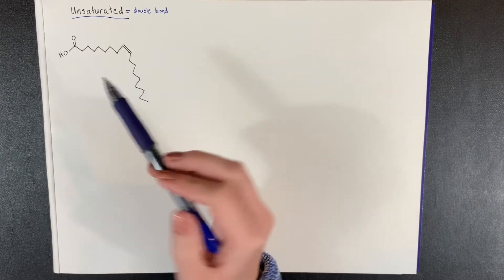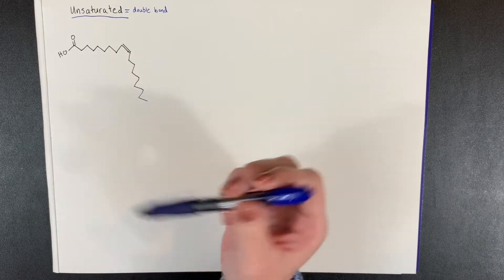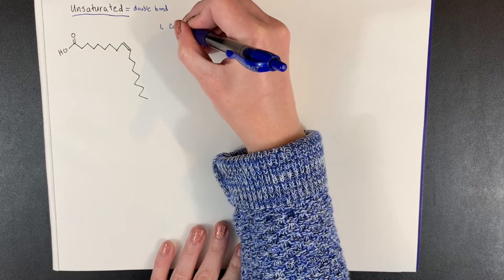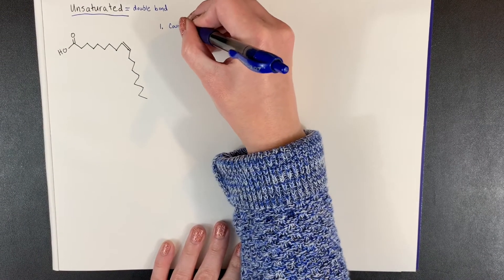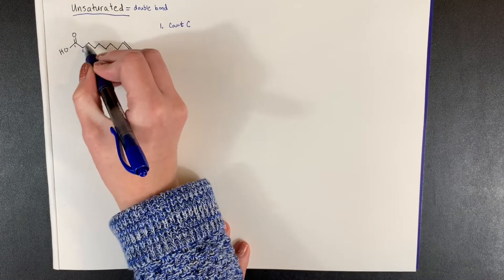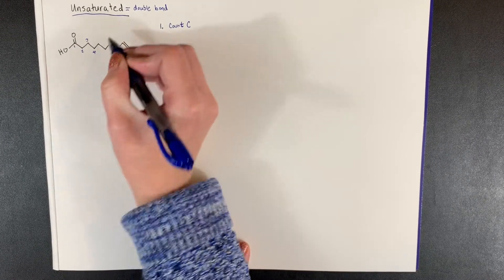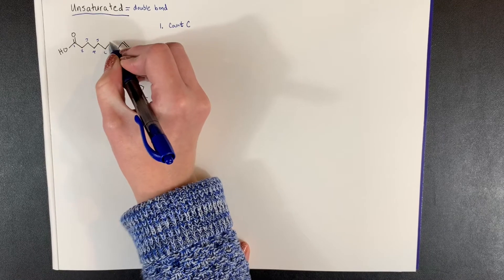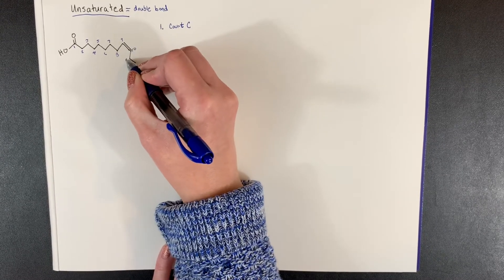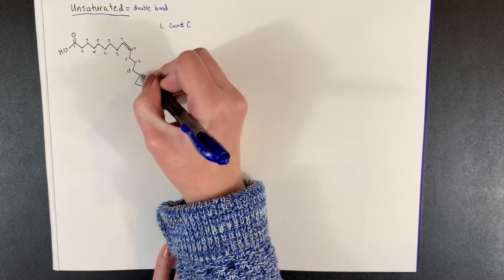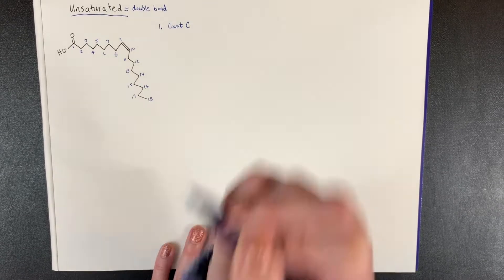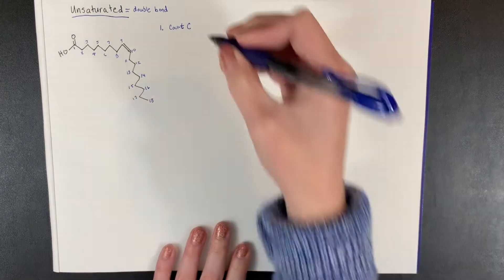Naming unsaturated fatty acids begins by following the same steps. Step one: count your carbons. So let's start here — one, two, three, four... I got 18 carbons.